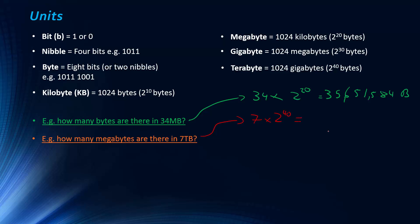M multiplied by 2 to the 20, because we're trying to convert our unknown amount of megabytes back to bytes, and then we can rearrange this to find M. So M is going to be 7 times 2 to the 40 divided by 2 to the 20. I'm not even going to bother trying to simplify this, I'm just going to type in 2 to the 40 divided by 2 to the 20, so this is going to be 7,340,032 megabytes.